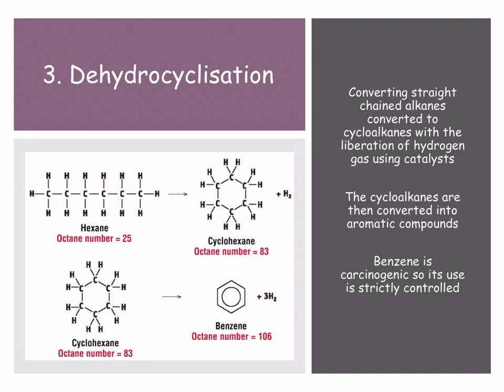We can also use this method called dehydrocyclization. So think about that word for a minute. It's taking straight-chained alkanes converting them into cycloalkanes and liberating hydrogen gas. Dehydro, removing hydrogen, cyclization, making it a circle. So you can see your hexane going to cyclohexane, huge jump in our number and cyclohexane being converted into benzene. Benzene having an octane number of 106.